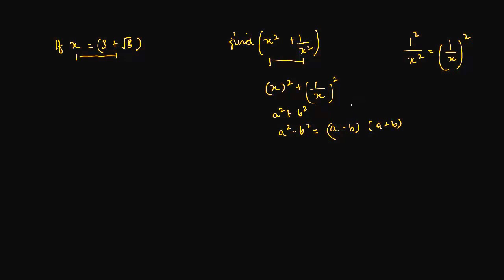But what we have is that a plus b whole square is equal to a square plus b square plus 2ab, right?